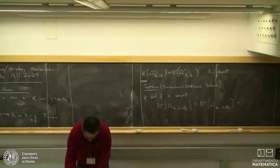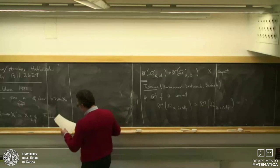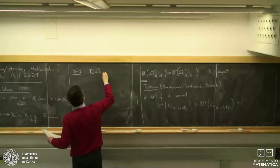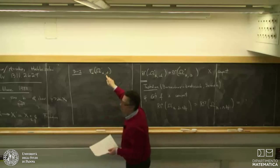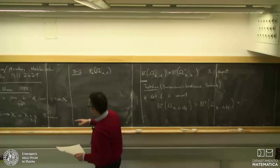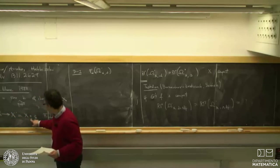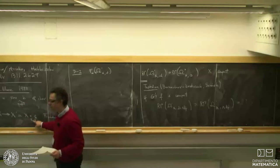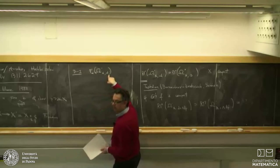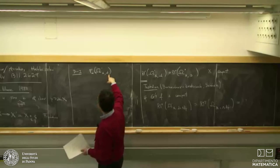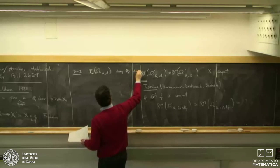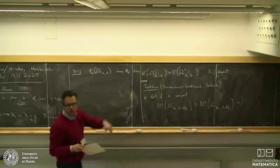Deligne and Illusie prove the following. If you take the de Rham complex of X with the nonlinear differential D and push it forward to X′, it becomes O_{X′}-linear — because the nonlinearity of D goes away when dealing with p-th powers. Moreover, if X lifts to W_2(K) — the ring of second Witt vectors of K, which is like ℤ/p²ℤ when K = ℤ/pℤ — then this complex is not only O_X-linear but actually quasi-isomorphic to the direct sum ⊕_i Ω^i_{X′}[-i], i.e., a complex with zero differentials.